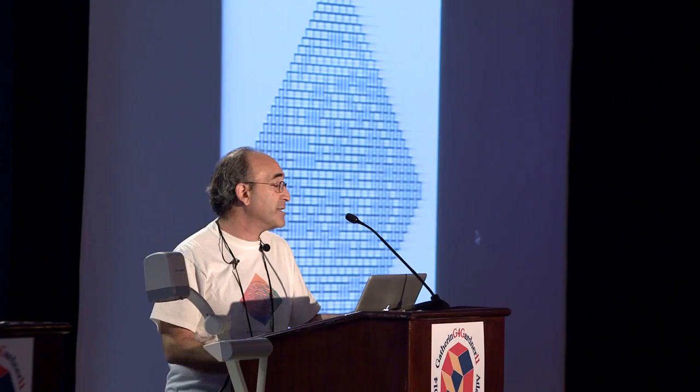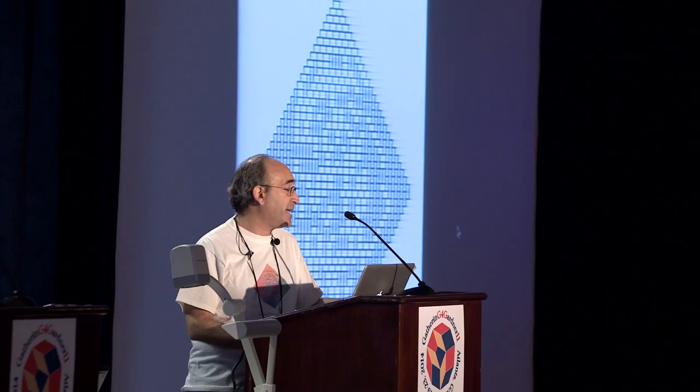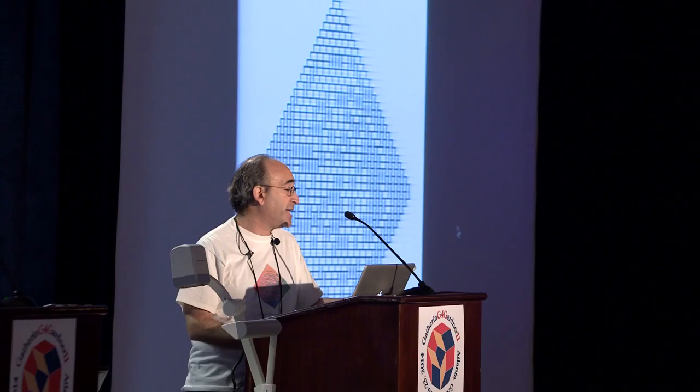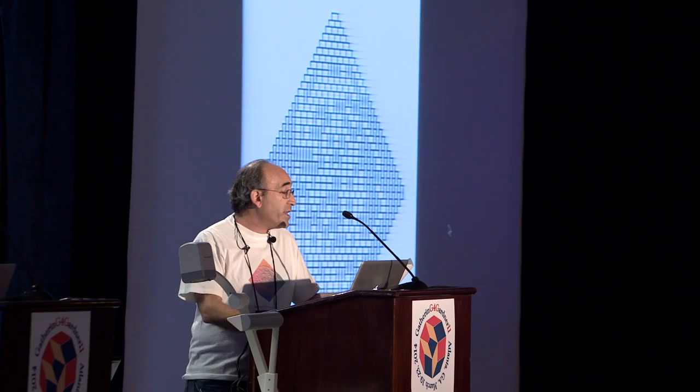If you choose one of those tilings uniformly at random so that all tilings are equally likely, with overwhelmingly high probability you'll pick one that resembles this — having four regions in the corners, north, south, east, and west, where the tiles line up in a brickwork fashion, and a region in the middle where horizontal and vertical tiles are jumbled together. Nearly all the tilings look like this. And the most amazing part is the boundary between the brickwork in the corners and the jumble in the middle converges to a perfect circle as the size of the Aztec diamond goes to infinity.